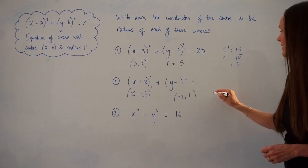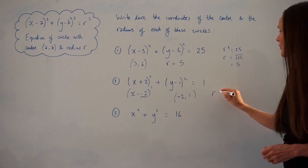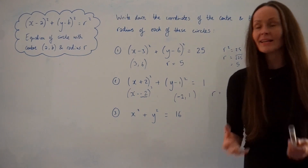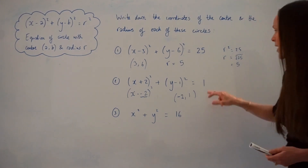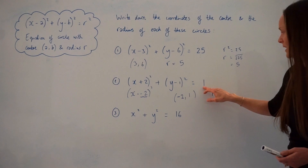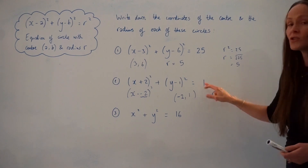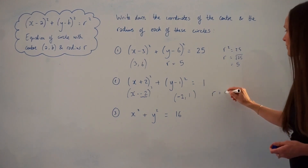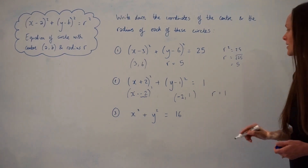Just like in the first question, to work out the radius you have to square root this number. The square root of 1 is 1, so the radius is 1. So here's the centre of the circle and this is the radius.